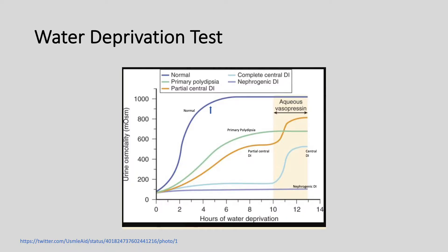Let's look at the graph and consider different possibilities. In the dark blue curve tagged 'normal,' this is what happens if you're doing the test on a patient without diabetes insipidus or primary polydipsia. Urine osmolality rises, plateaus after about four hours, and stays up. When you give aqueous vasopressin, nothing happens because vasopressin is already maximized. The normal graph is clearly different from all other conditions.